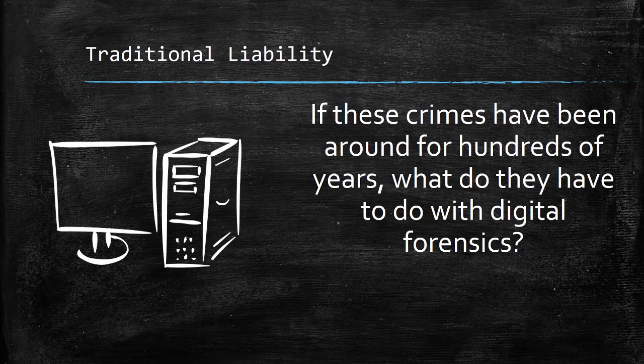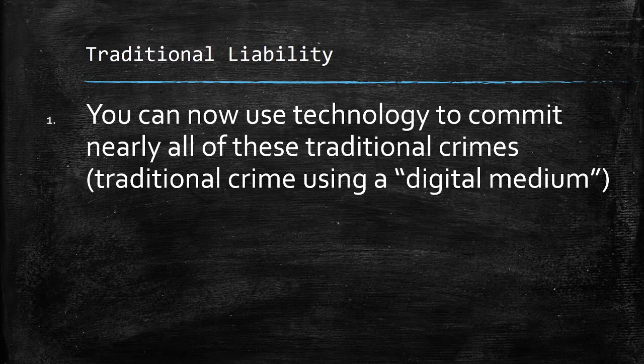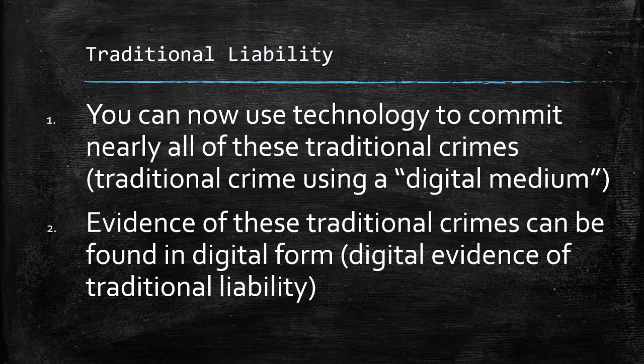If these crimes have been around for hundreds or thousands of years, what does this have to do with digital forensics? You can now use technology to commit nearly all of these traditional crimes — I'll refer to this as traditional liability using a digital medium. 'Medium' means using one thing to do something else; digital is the thing being used, and traditional liability is what's being accomplished. So you can use a computer to murder or steal from someone. In addition, evidence of these traditional crimes can be found in digital form — digital evidence of traditional liability — just as fingerprints are evidence you can find at a crime scene.